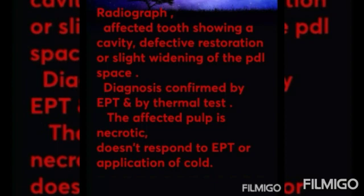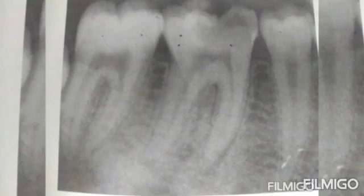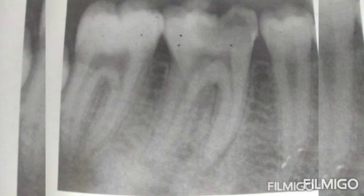Diagnosis is confirmed by EPT (electric pulp test) and thermal test. The affected pulp is necrotic, so it does not respond to EPT or application of cold — this is the confirmatory test. Radiographs may show extraoral swelling and, on the X-ray of acute alveolar abscess, mild widening of the periodontal space on the mesial side of the root is a classical finding.